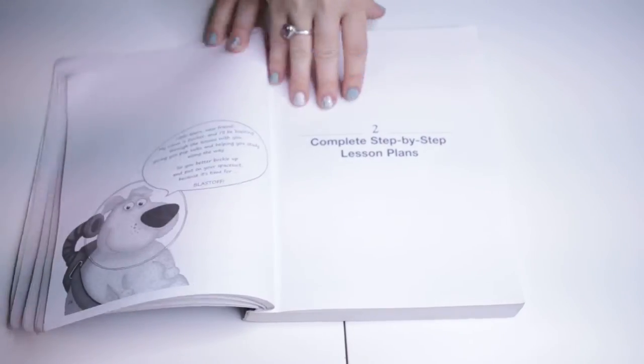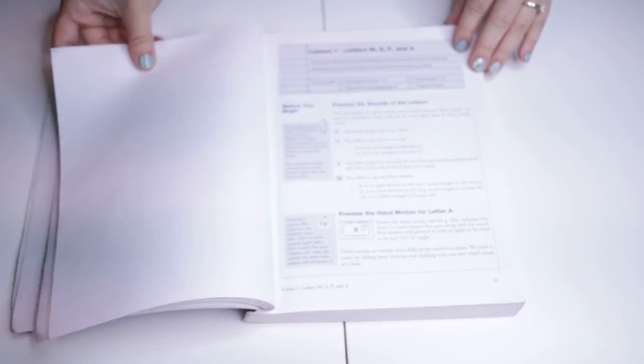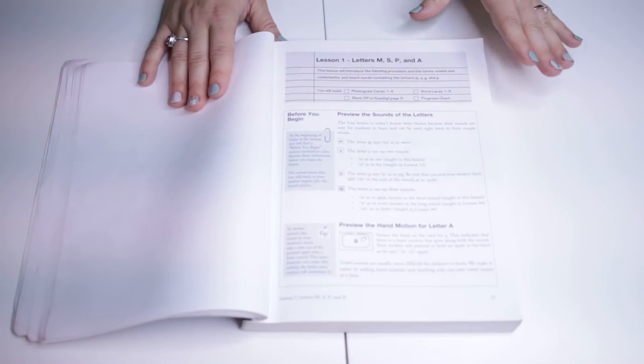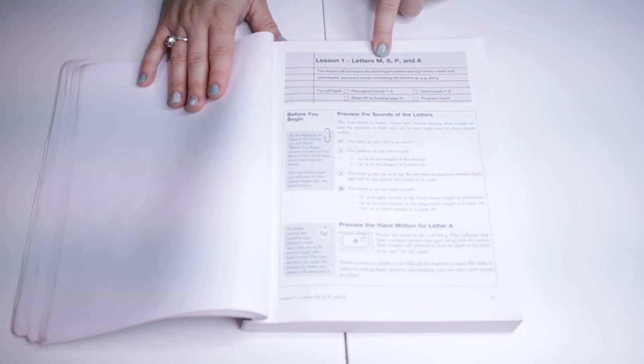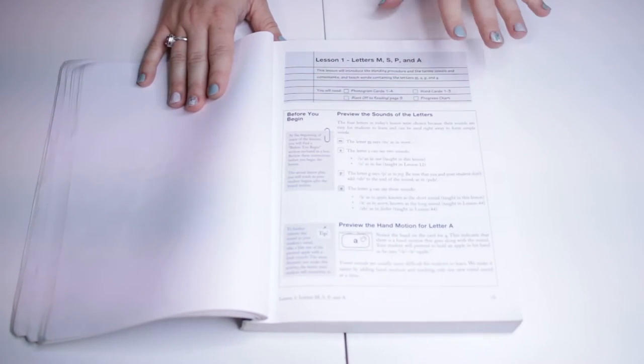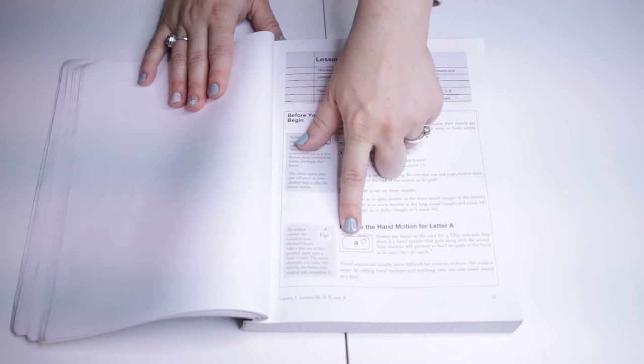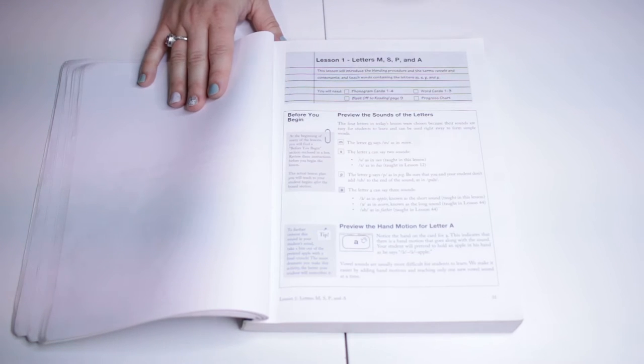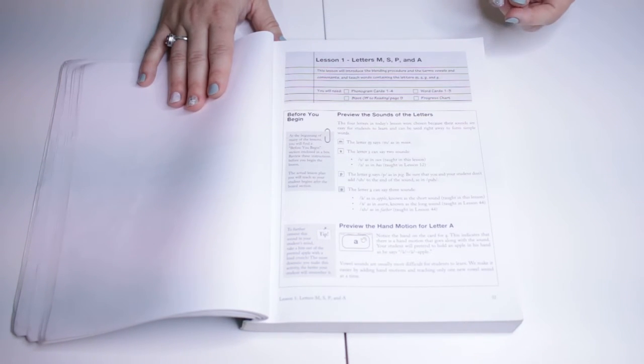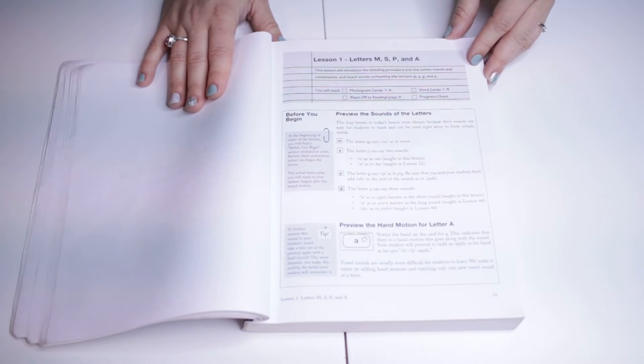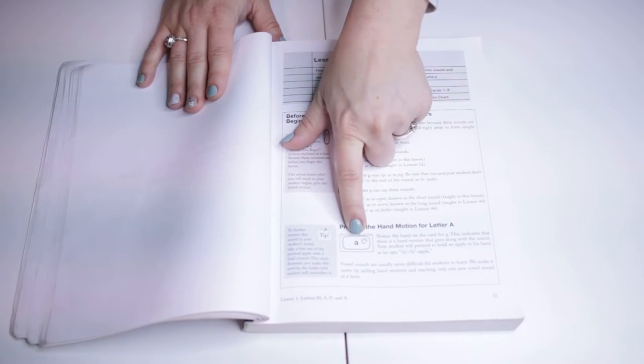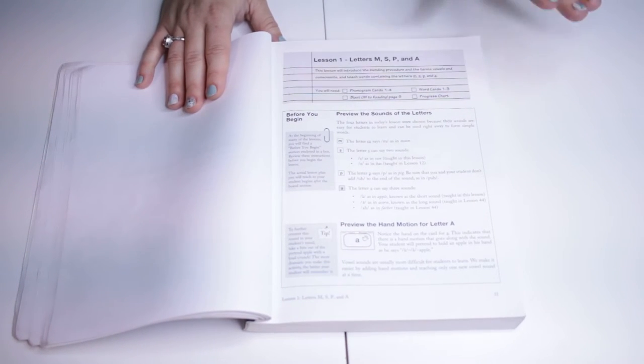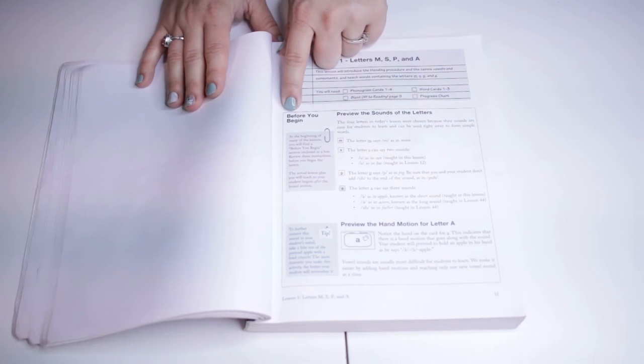Okay, so here we are in the lesson. This is generally how it goes. Lesson one here is learning the letters M, S, P, and A. And generally what you would do is you get out little cards that come with the kit. The cards have the letters and they have the actual sounds on the back too for the parent in case you for any reason might forget all the sounds that letter can make.